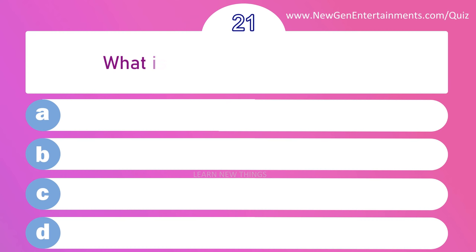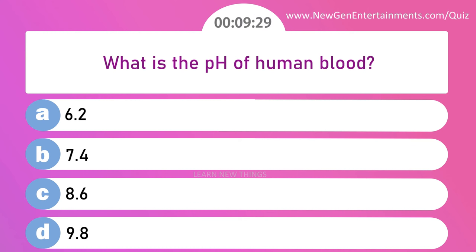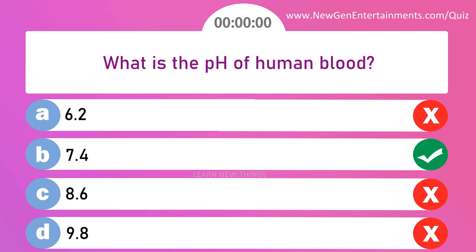What is the pH of human blood? Options are: A) 6.2, B) 7.4, C) 8.6, and D) 9.8. Answer is option B: 7.4.